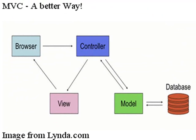MVC consists of a controller, a viewer, and a model. The browser interacts with the controller, the controller passes information back and forth to the model, and that model grabs information from a database, passes it back to the controller, and then sends information to the viewer, which goes back to the browser.